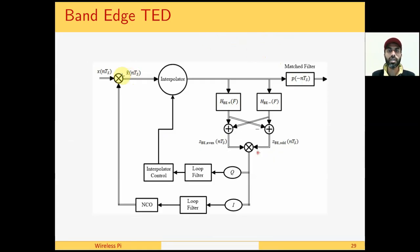Here is a block diagram for the band-edge timing and frequency error detector. The output from the upper and lower band-edge filters is added together to form the even output, and subtracted to form the odd output. The conjugate of one is multiplied with the other — the Q part drives the timing lock loop and the I part drives the frequency lock loop.